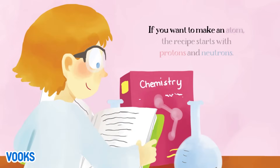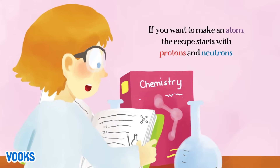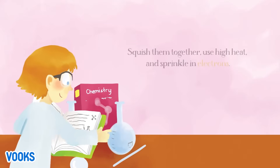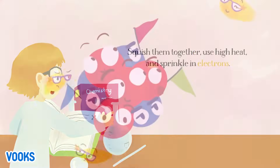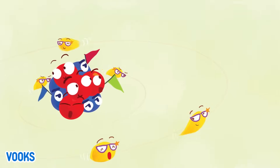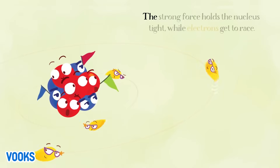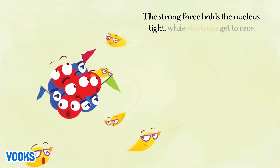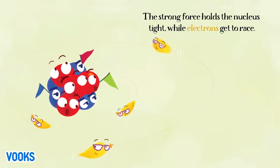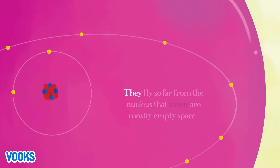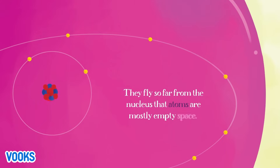If you want to make an atom, the recipe starts with protons and neutrons. Squish them together, use high heat, and sprinkle in electrons. The strong force holds the nucleus tight while electrons get to race. They fly so far from the nucleus that atoms are mostly empty space.